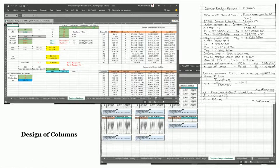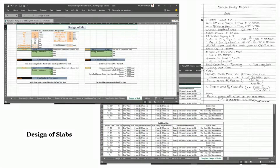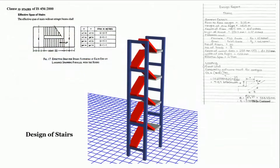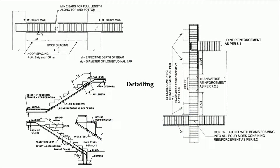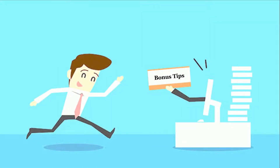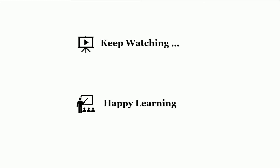Similarly, we'll do the same for beams and slabs. We can also design the staircase as we design our slab, but for clear understanding the staircase will be designed by manual calculations as per Indian standard codal provisions. We'll also cover ductile detailing as per IS 13920-2016. At the end I will give you some bonus steps to help improve your skills in the design of RC structures. So in this way we'll complete our course — keep watching and happy learning!